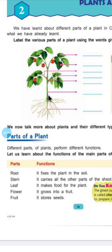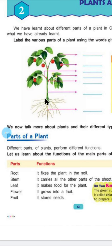This green portion is known as stem. What is the function of stem? It carries all the other parts of the shoot. यह जो shoot है ऊपर — shoot पे सारी branches भी होती हैं, leaves भी लगी होती हैं, इन सभी को shoot बोलते हैं. Stem इन सारे parts को carry करके रखता है, सीधा खड़ा करके रखता है. Stem के ऊपर ही branches, flowers, bud और leaf सारे parts होते हैं.